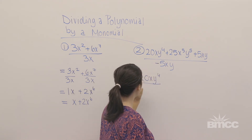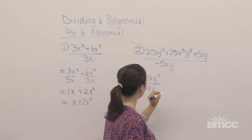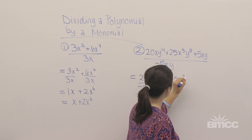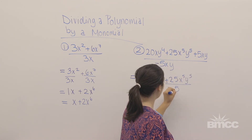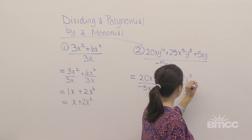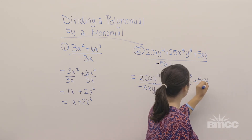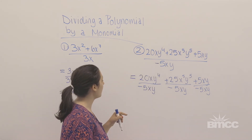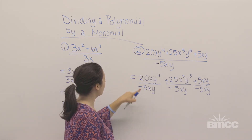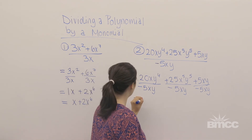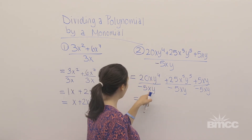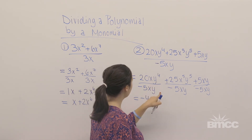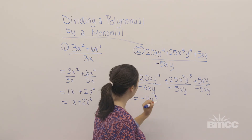So I'm going to have 20xy to the 4th divided by negative 5xy, plus 25x to the 5th y to the 5th divided by negative 5xy, plus 5xy divided by negative 5xy. So let's look at the whole numbers first. I have 20 divided by negative 5, which is negative 4. x divided by x is x to the 0 power, which is 1, and y to the 4th divided by y is y to the 3rd power.